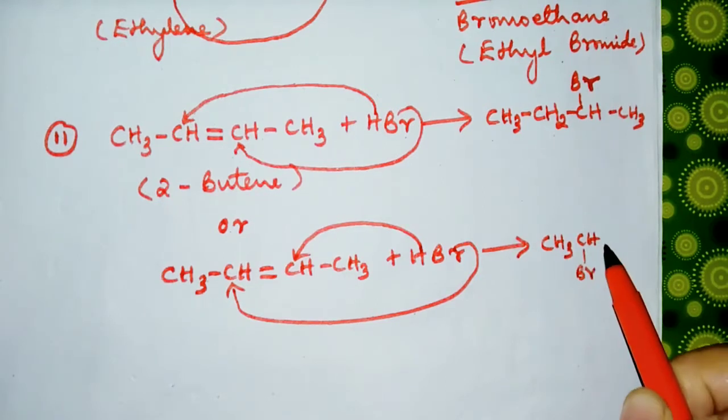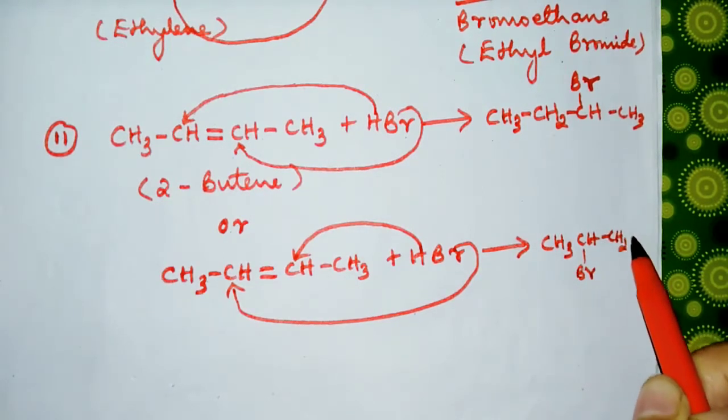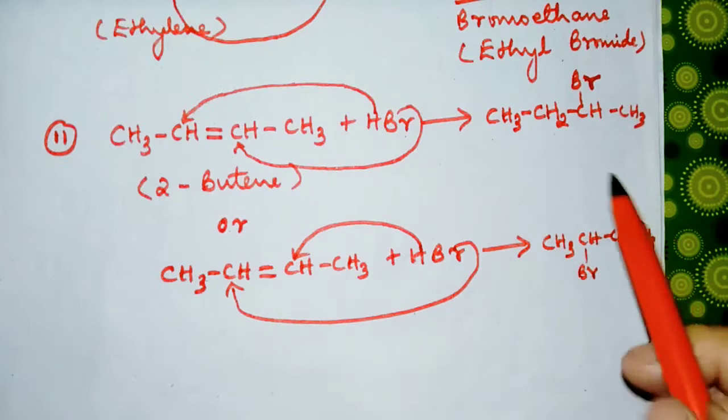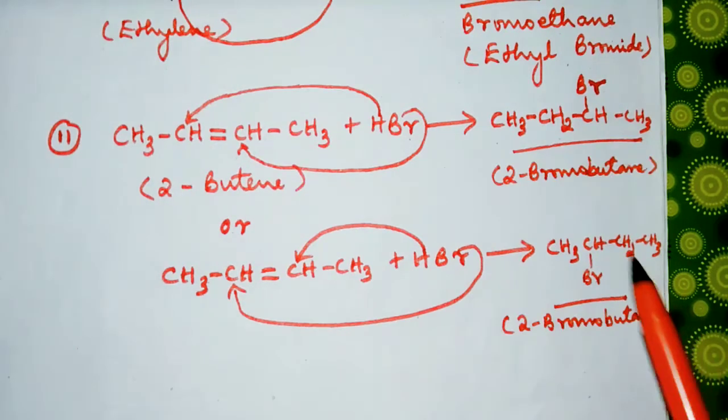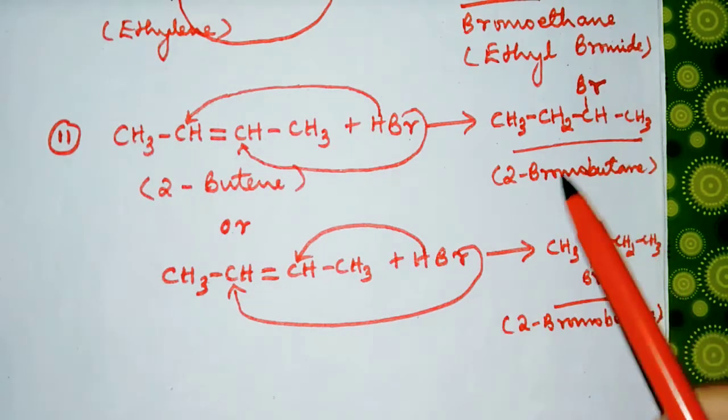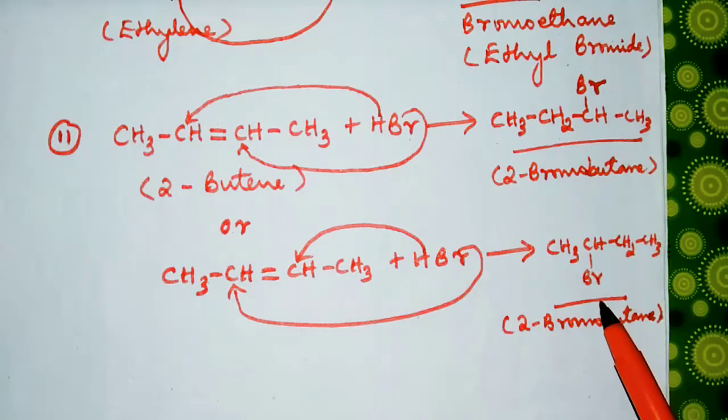Then we get CH3-CHBr-CH2-CH3. They are the same, not different. The name of this one is 2-bromobutane. This one is also 2-bromobutane. Now let us have a look at the mechanism.